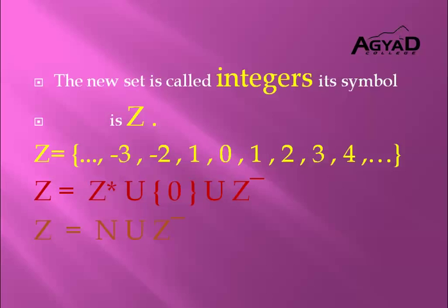So Z equals {0, 1, 2, 3, 4, ...} and also consists of {negative 1, negative 2, negative 3, ...}. All positive numbers represent numbers above 0, the number 0 itself, and negative numbers represent numbers below 0. We can also represent Z as the union of Z positive, the set {0}, and Z negative. Another way to represent Z is as the union of the natural numbers N and the set of negative numbers Z negative.